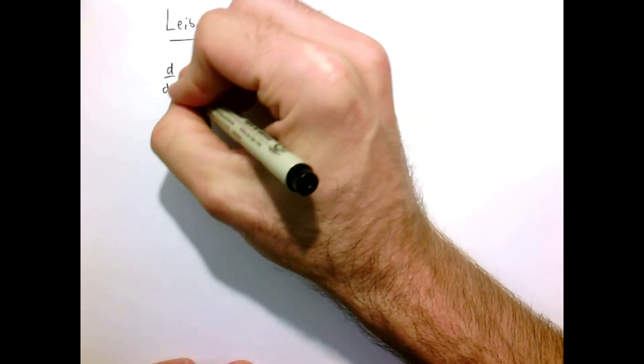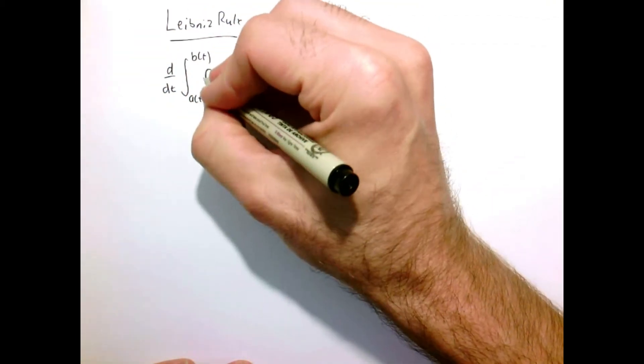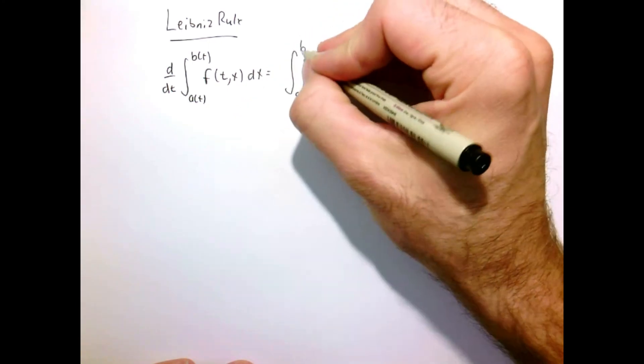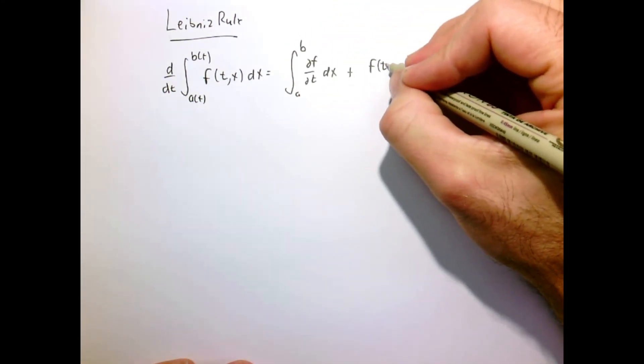Today let's make a connection between the Leibniz rule and the material derivative. Recall, in a previous video we derived this result in one dimension.